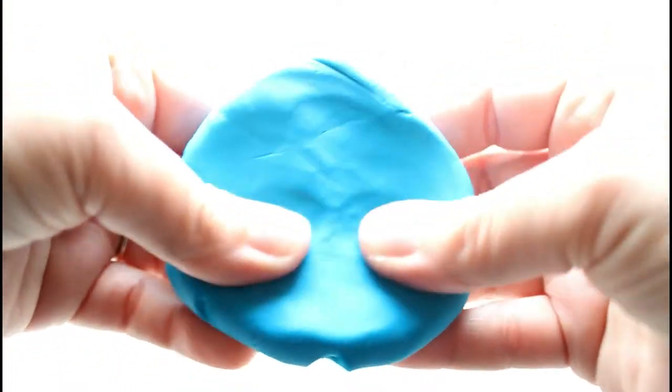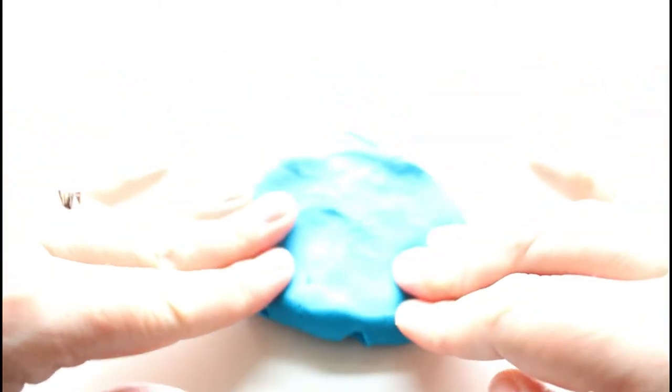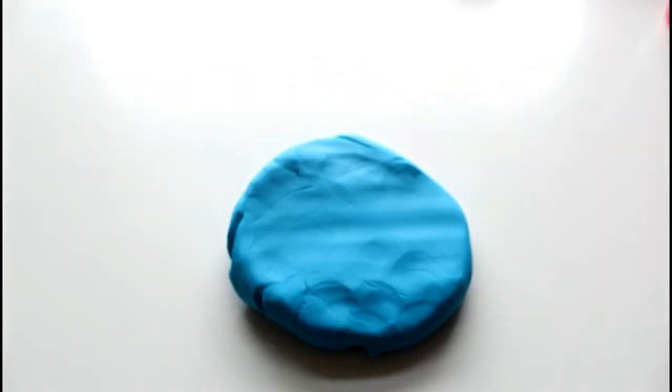The first thing we're going to do is take our blue play-doh because it's going to be the bottom layer of our cake. We're going to flatten it out a little bit. Once we have it flattened out pretty well with our fingers, we're going to take the roller and roll it out.